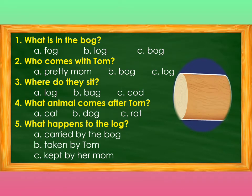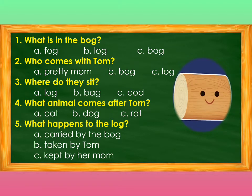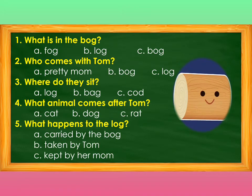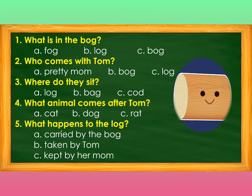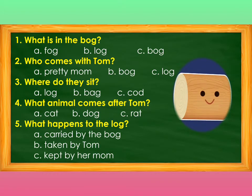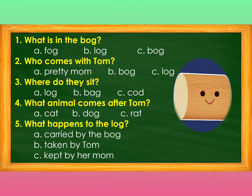Number 1: What is in the bog? A. Fog, B. Log, C. Bog. Number 2: Who comes with the dog? A. Pretty Mom, B. Bog, C. Log. Number 3: Where do they sit? A. Log, B. Bog, C. Cod. Number 4: What animal comes after Tom? A. Cat, B. Dog, C. Rat. Number 5: What happens to the log? A. Carried by the bog, B. Taken by Tom, C. Kept by her mom.